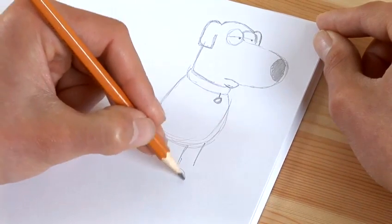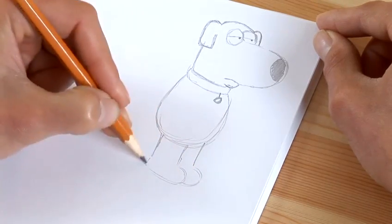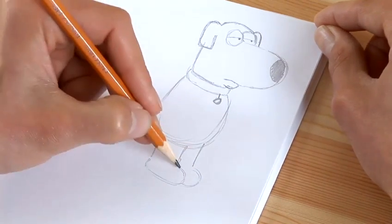His feet are nice and easy. You just do a couple of lines like that. Do them nice and lightly. And we can thicken them up when we've got them in the right place.